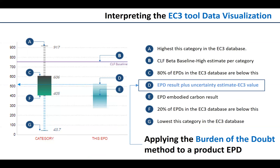If we look at the product scale on the left, we can see how the EC3 tool reports data within a category — for example, all 3,000 PSI concretes. The high value is noted by the A and the low value by the G, representing the limits of data in the EC3 tool database. The green bar represents a high conservative estimate of embodied carbon, with 80% of products below that number, and the low achievable data point has 20% of products below it. There are some high and low outliers, but most products fall within the band of the green bar.